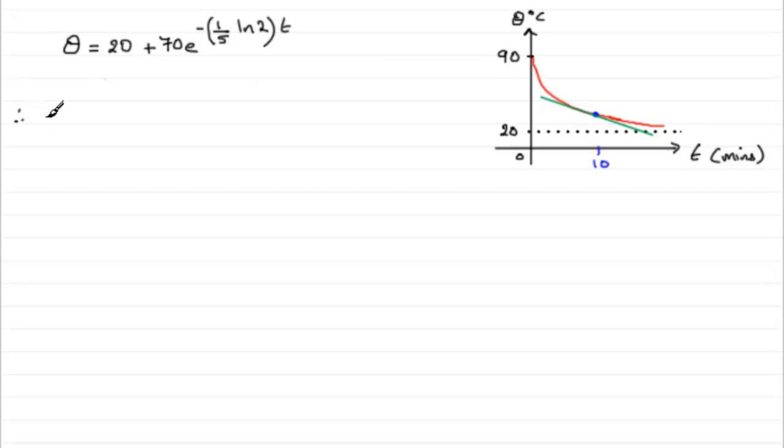So I'm going to have, therefore, d theta by dt equals... Well, if I differentiate 20 with respect to t, that's easy. It's just simply zero. But when I get to this part, I've got 70e to the minus... And this is a constant. Just see, this is our value k, kt. We should know that this gives us 70 multiplied by the differential of e to the minus kt, which is going to be e to the minus kt multiplied by minus k.